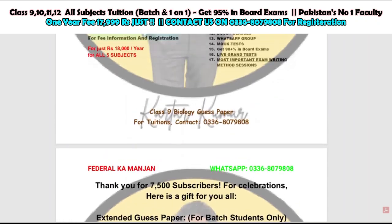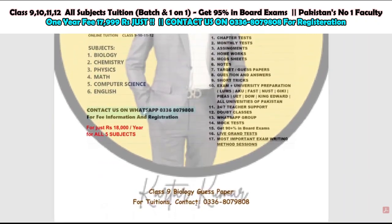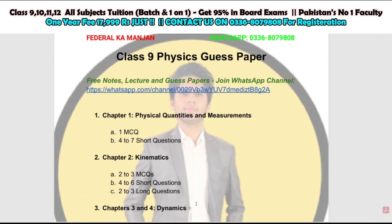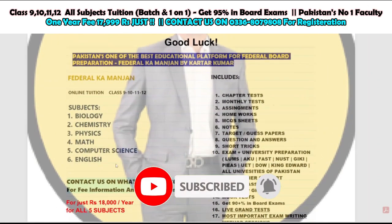I would recommend joining our batch at very low fees to secure your future. Class 9 students — if you have not studied well, use the year you have left wisely. You should not regret it later. Intermediate students come to me with ruined matriculation marks. A small decision can change your whole life. I hope you get good marks in physics. You can join the batch by contacting us on the WhatsApp number shown on screen.